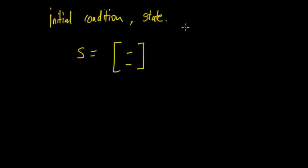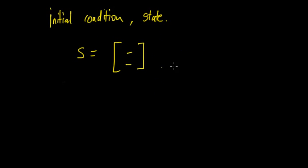then you can sub in the initial condition, because we already know it. There are two things you can put in the initial condition: firstly, you can put in the probabilities, and secondly you can put in the number of people, depending on the question.